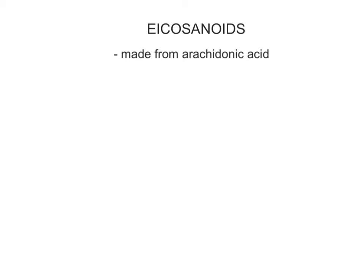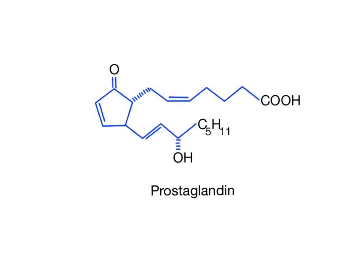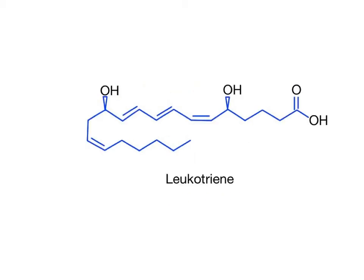Another group of lipids are the eicosanoids, which are assembled from arachidonic acid, a 20-carbon atom fatty acid. The two main subclasses of eicosanoids are the prostaglandins and leukotrienes. The prostaglandins have a diverse range of functions, including modifying the body's responses to hormones, regulating body temperature, helping to form blood clots, dilating airways, and participating in inflammation. Leukotrienes play roles in inflammation and allergic reactions.